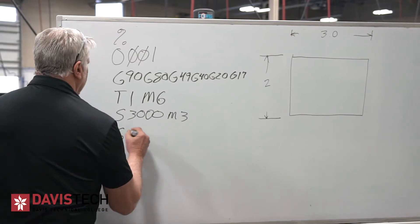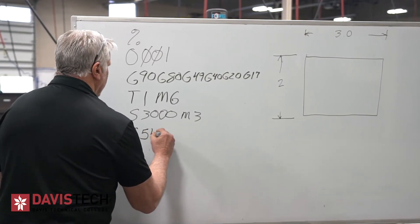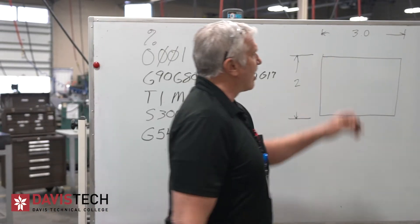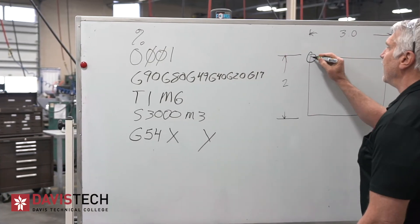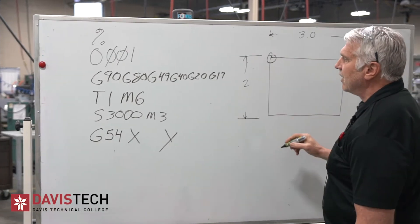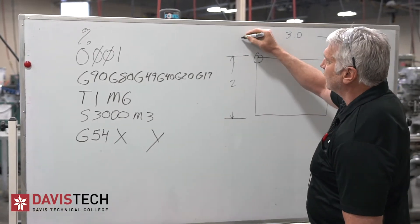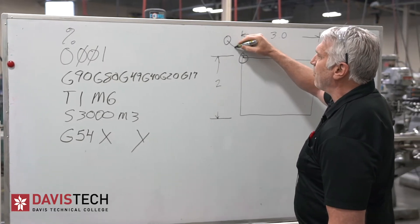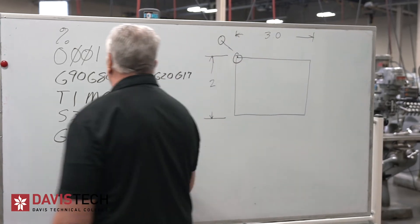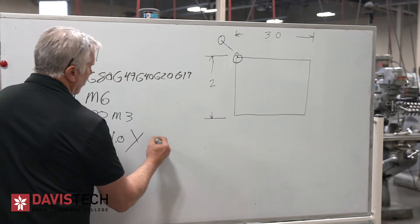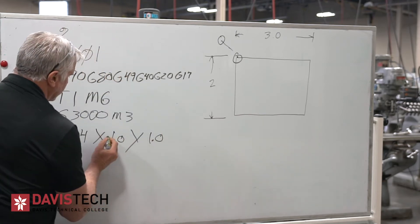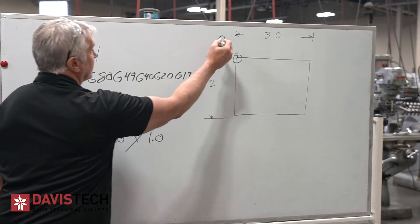So we're going to say G54. And then we're going to give it an X and a Y location. Now in this part, when we're looking at our part, we might call this point right here X0, Y0. This corner right here. So in this case, I might want to start, come over here, and I'm going to move into that point right there. So I'm going to be X negative one and Y positive one. So X over here, I'm going to put negative one inch and I'm going to put Y of one inch. And so my tool would go right here.